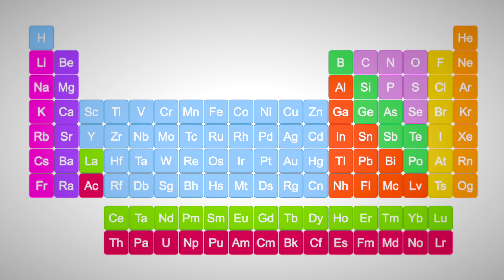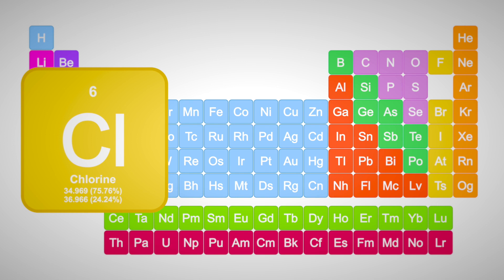Other elements differ in relative abundance and number of isotopes. Chlorine, for example, has two stable isotopes: 75% of chlorine atoms are chlorine-35, and 25% are chlorine-37.